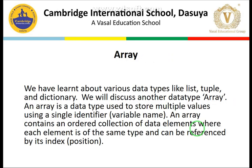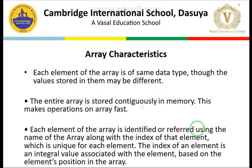What is an array? We have learnt about different data types like tuple and dictionary. Now we will discuss another data type. An array is basically a collection of homogeneous elements — elements with the same data type. They share a single identifier and can be referenced using an index. The main characteristics: elements should be of the same type, stored at continuous memory locations, and each element is referenced using the array name along with the index. This makes it very easy to access elements.